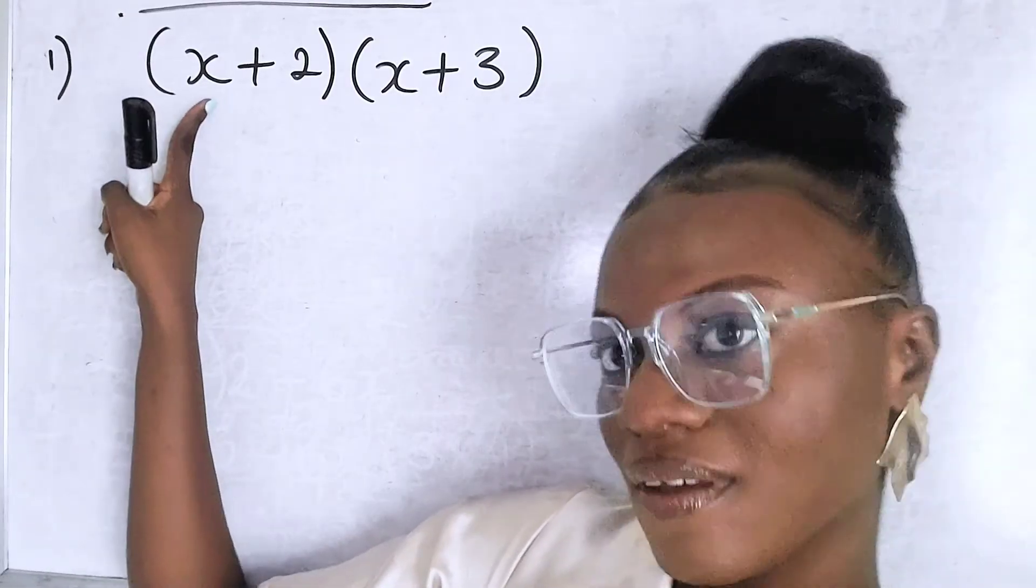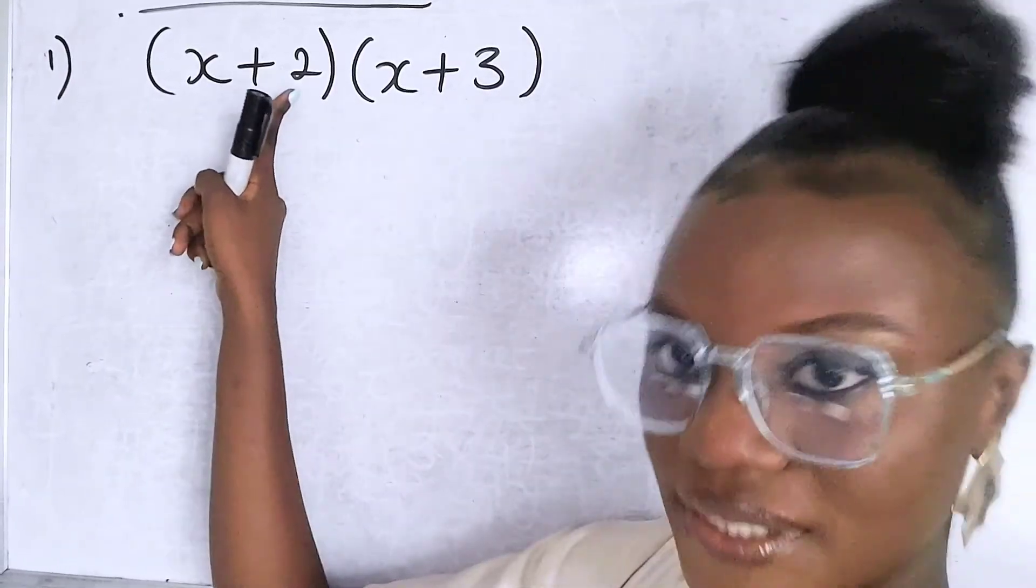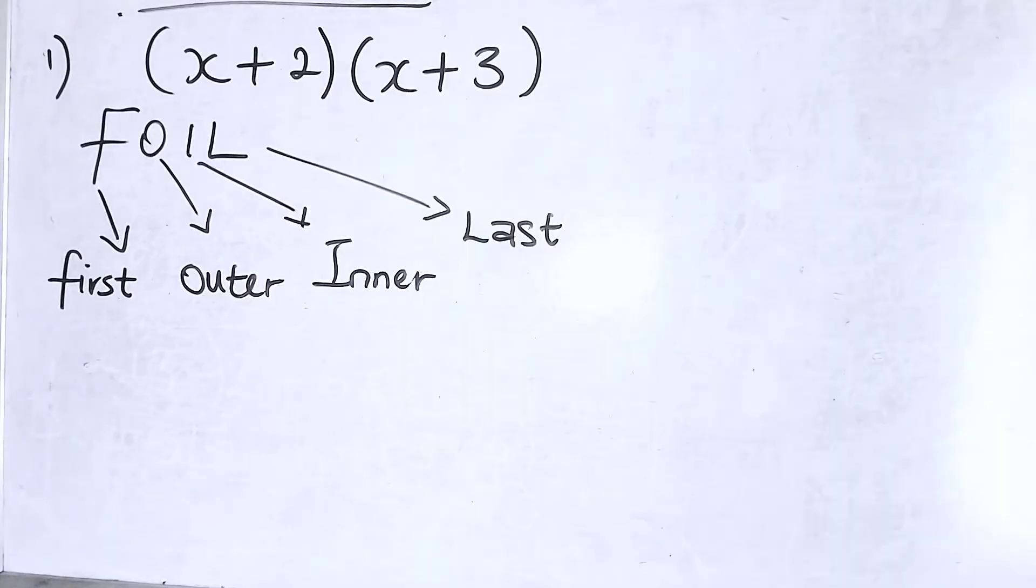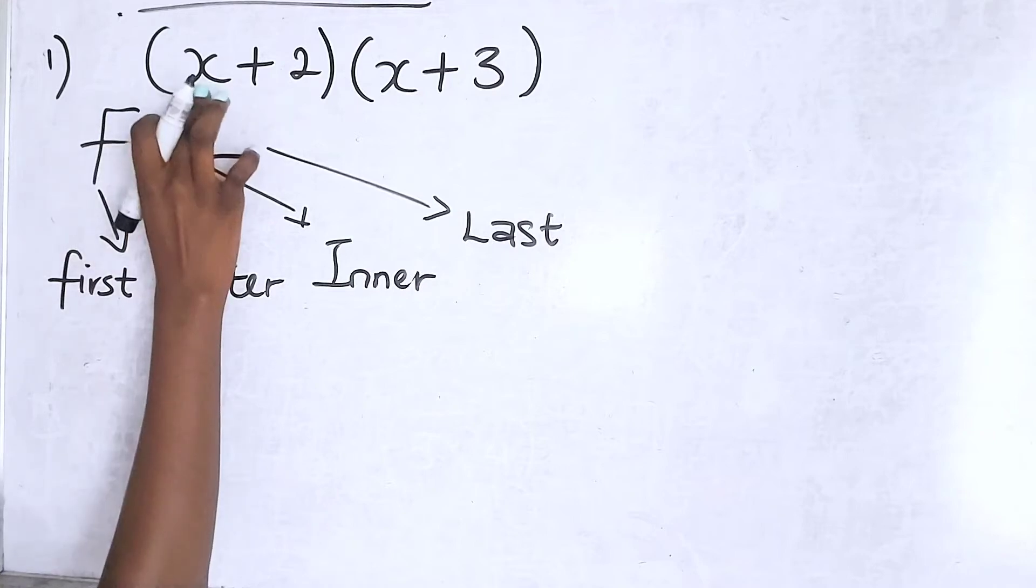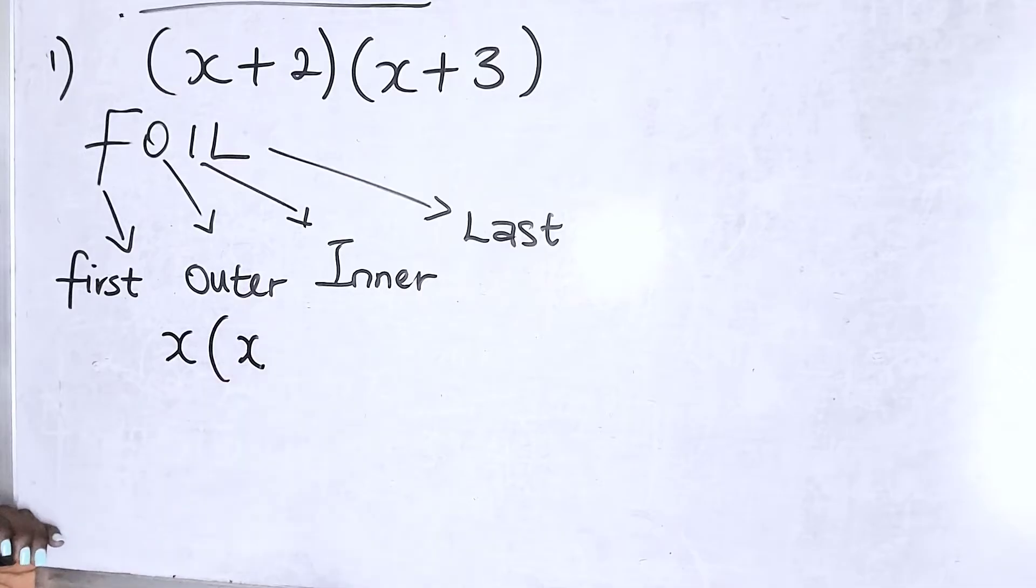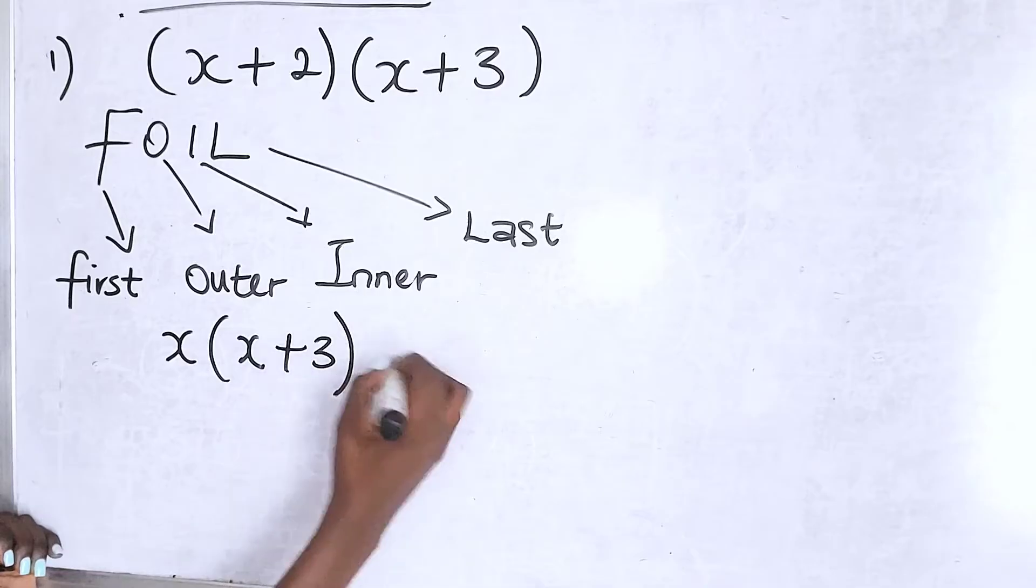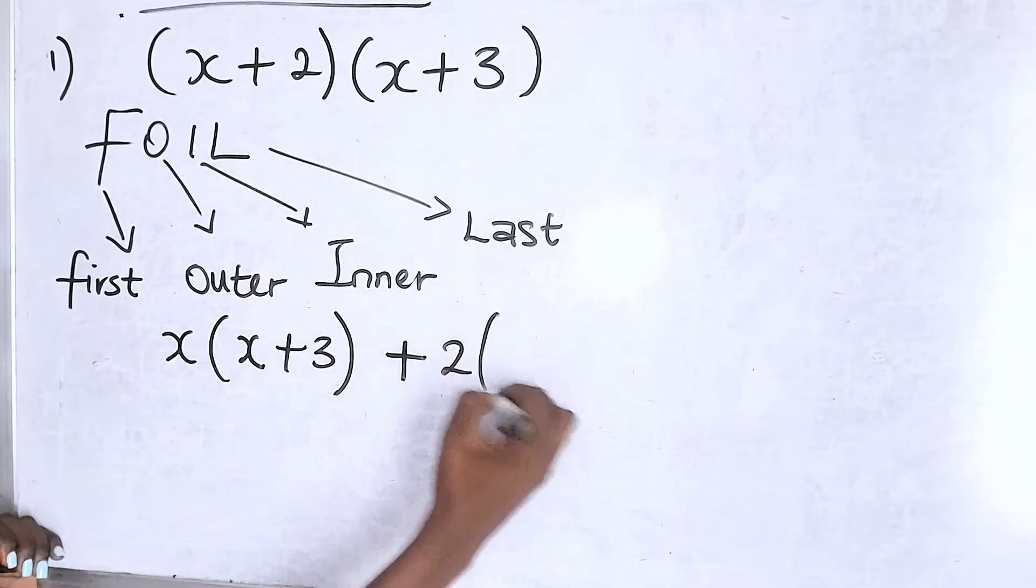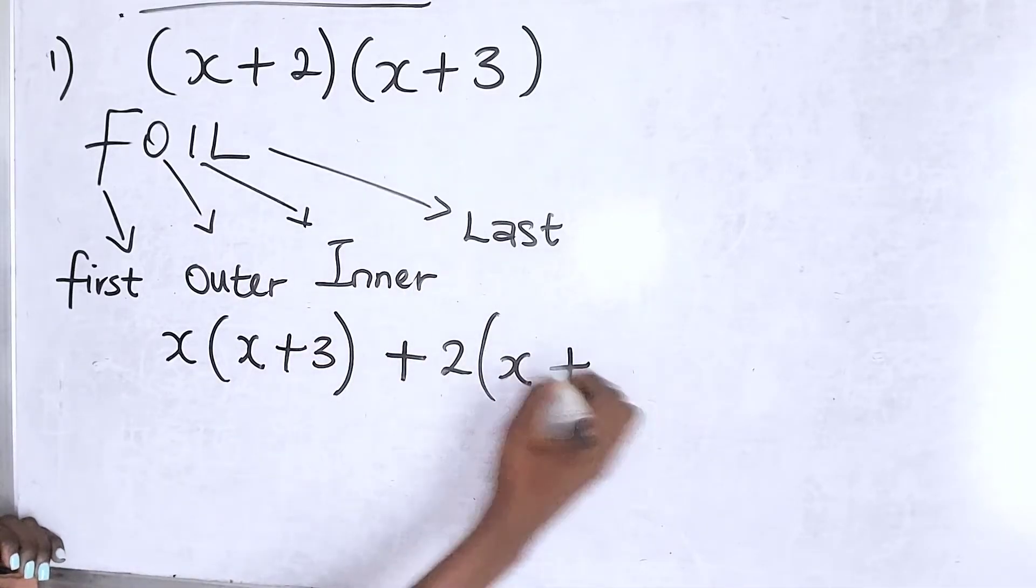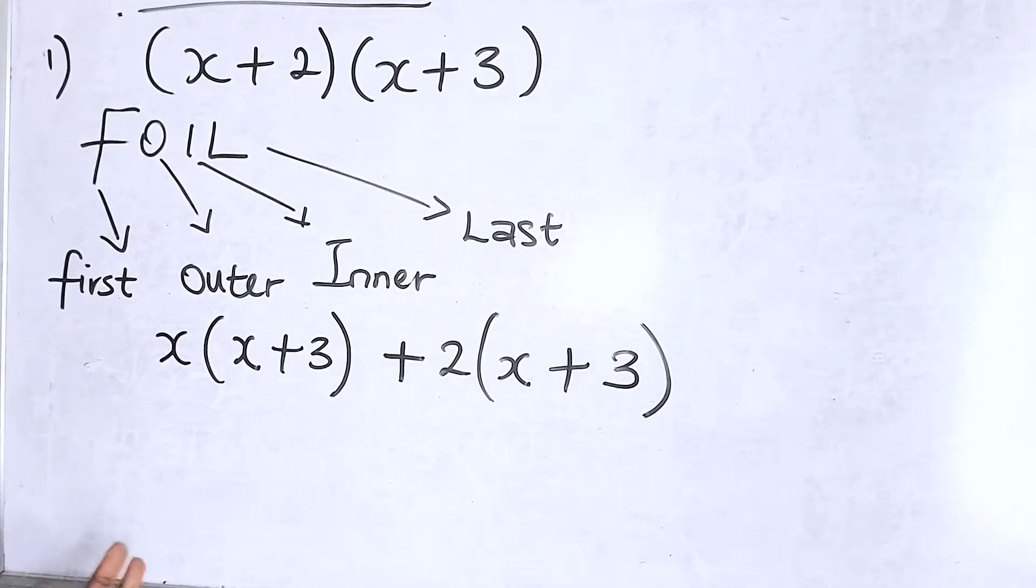In this case, we're going to pick this first term and use it to open the second bracket, and then pick this second term and open the second bracket. So in this case, what is first? X times X represents first. X times 3 represents outer, and then picking the second term times this X represents inner, and then picking this to multiply the last means last. I hope that makes sense.